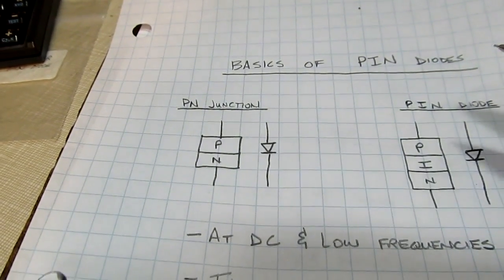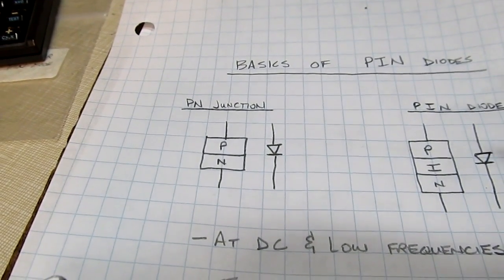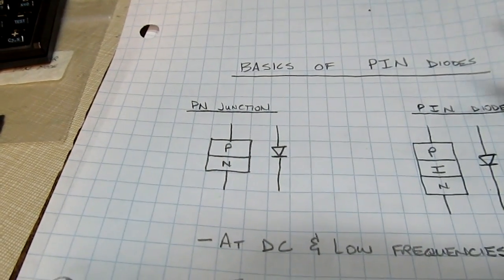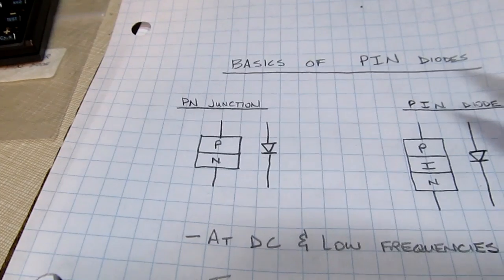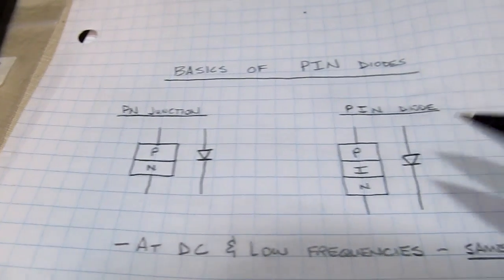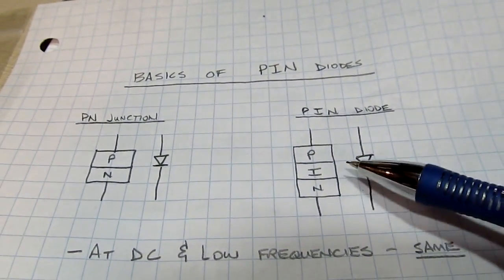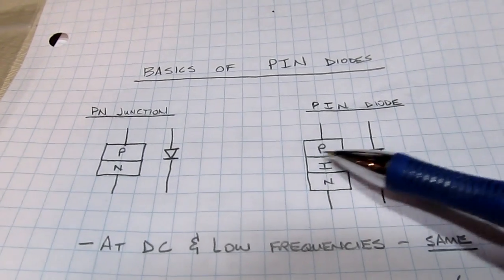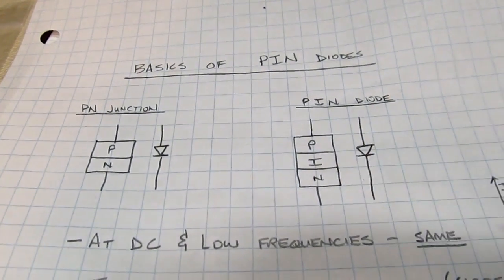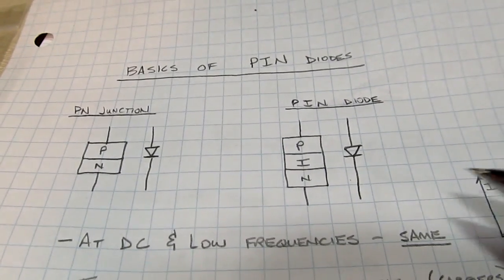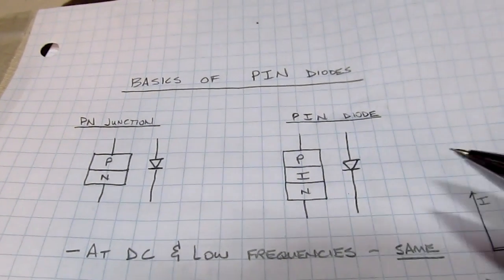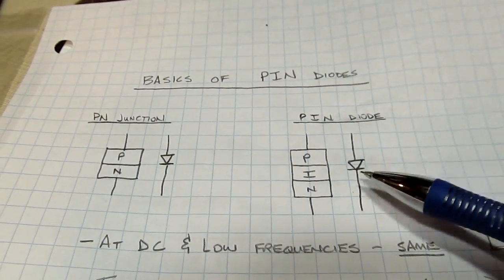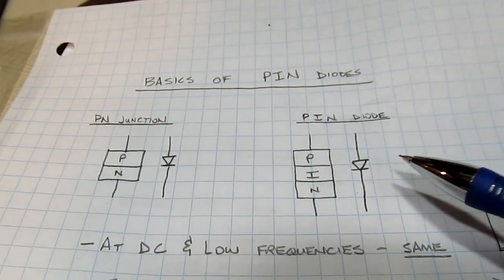Fast switching diodes like the 1N4148 have a reverse recovery time typically in single-digit nanoseconds. On a PIN diode it's orders of magnitude longer because there's a much larger bucket of stored charge with the intrinsic region. So a PIN diode would make a lousy fast rectifier or fast switch, but there are other things it's very good at.